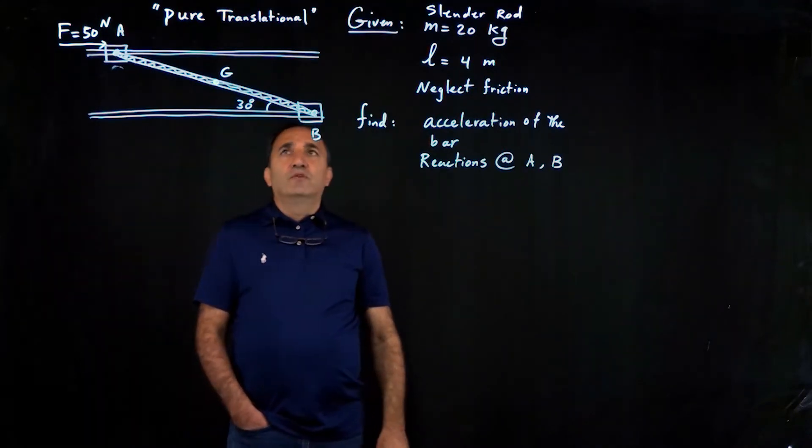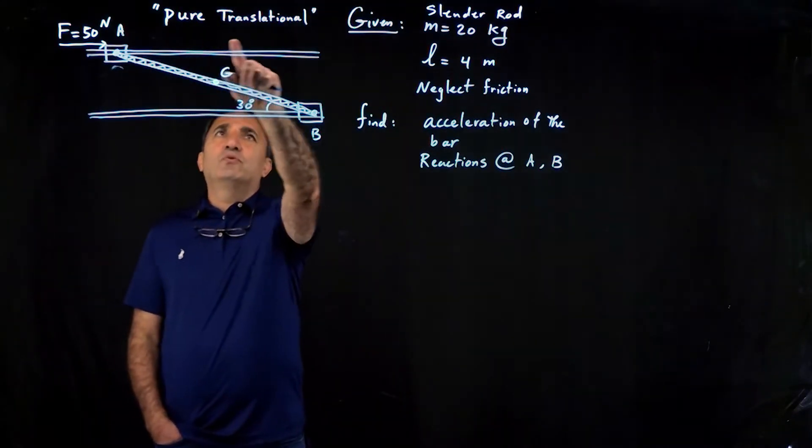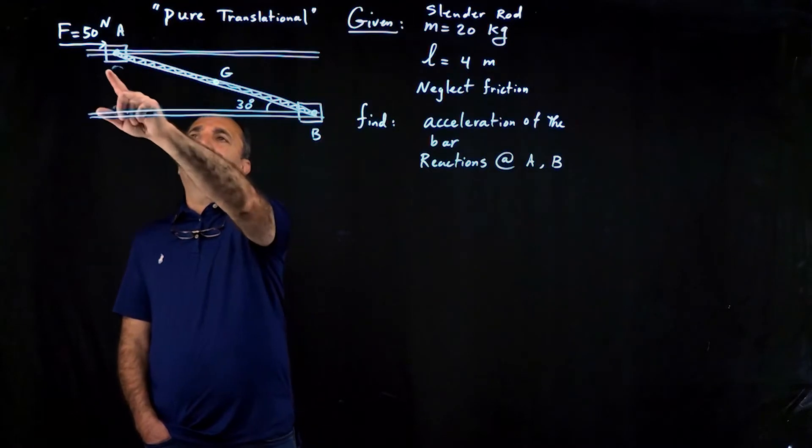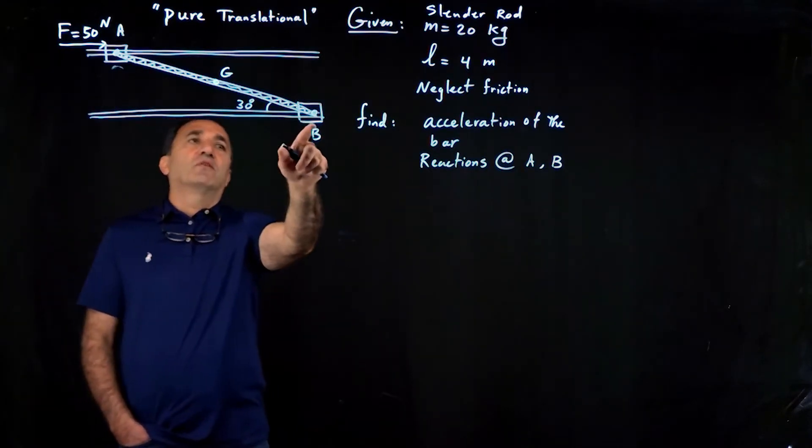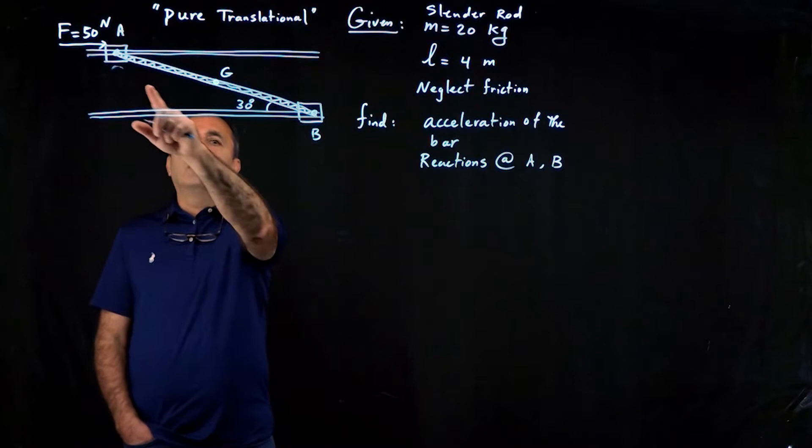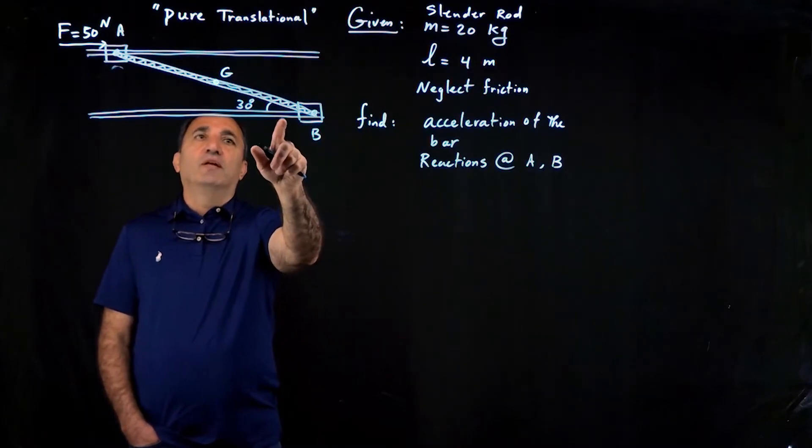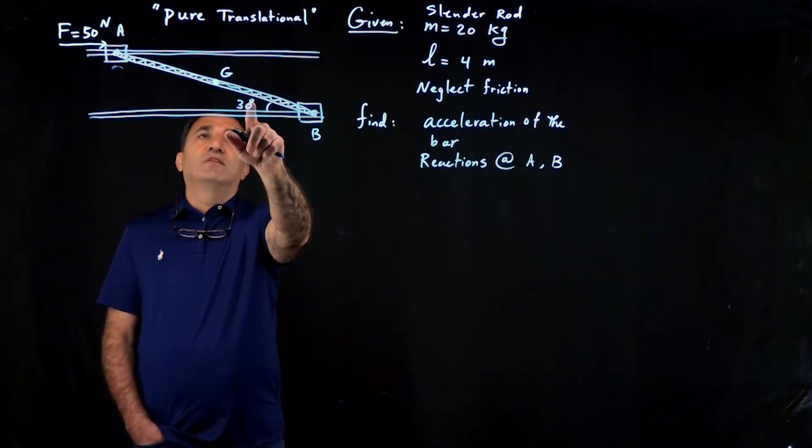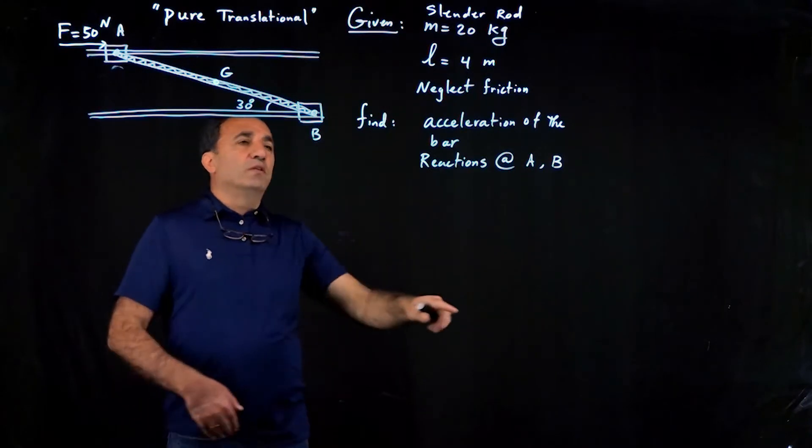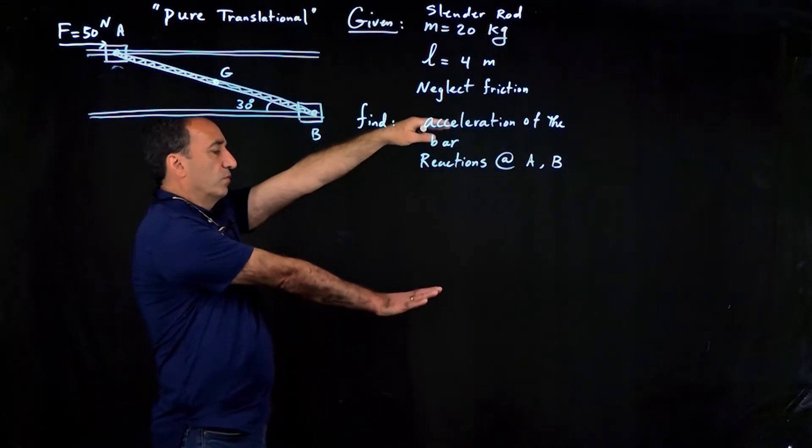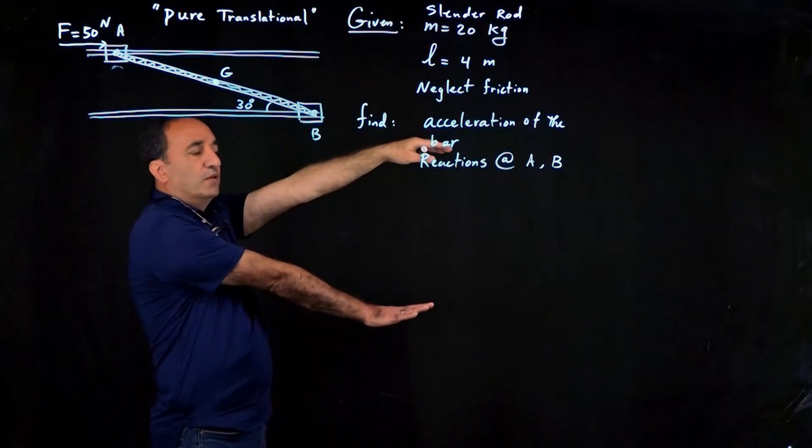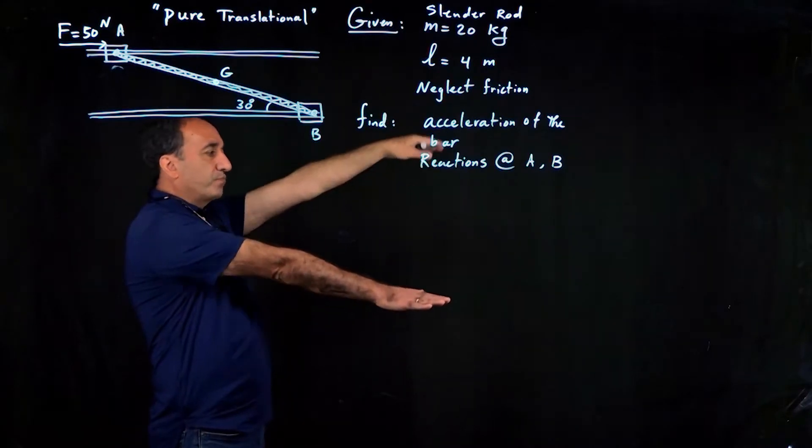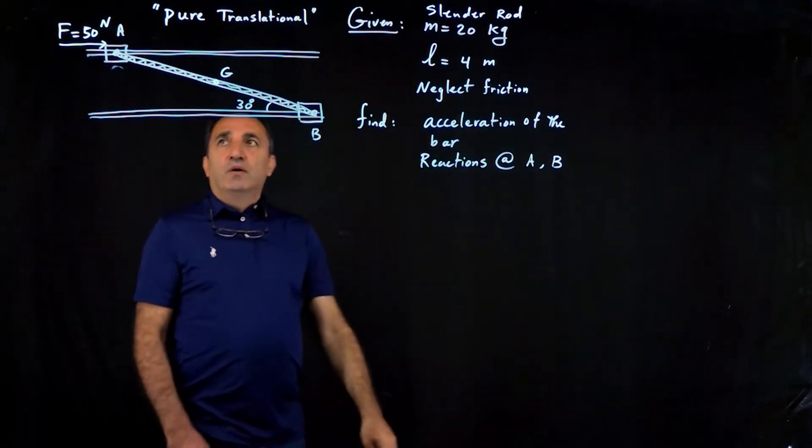So here I put down that this is a pure translational problem. The only motion that this bar, this slender rod or bar can have is pure translational. And this angle 30 degrees is not going to change. By the way, these two slots are in the same plane, so they are in the same plane.